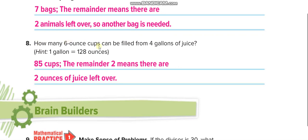How many 6 ounce cups can be filled with 4 gallons of juice? Hint, 1 gallon is 128 ounces. If 1 gallon is 128 ounces, so 4 gallons means 512 ounces. When you divide 512 with 6, you will get 85, and the remaining 2 ounces left over.